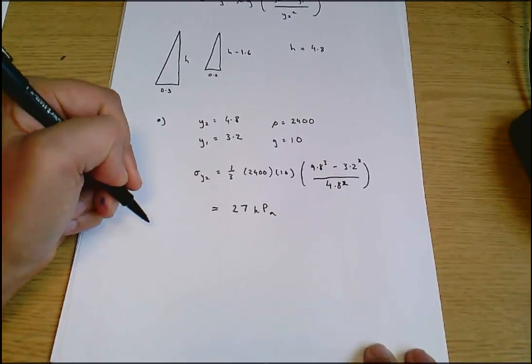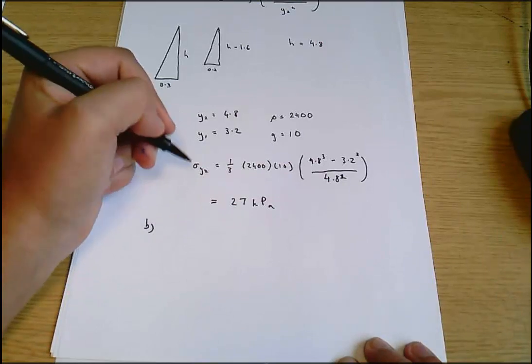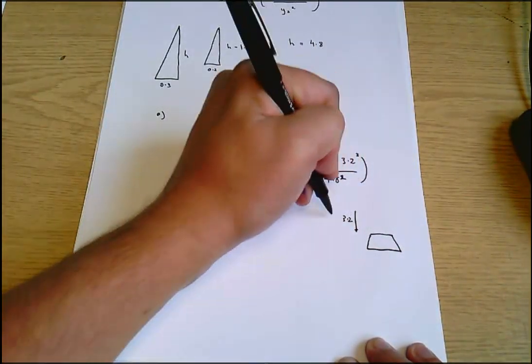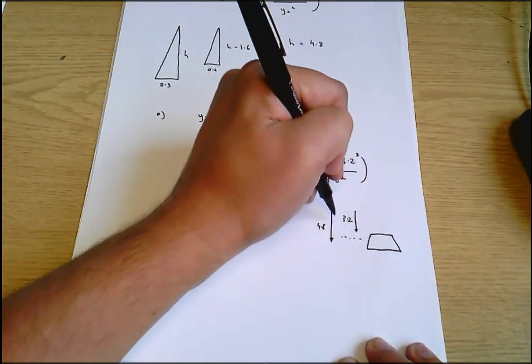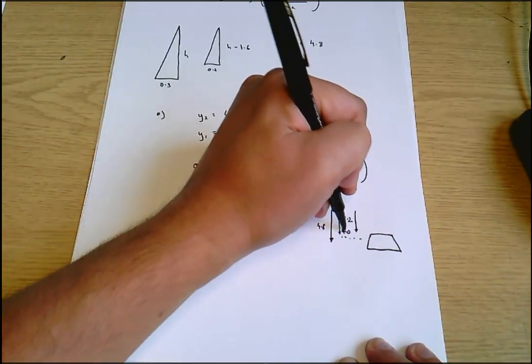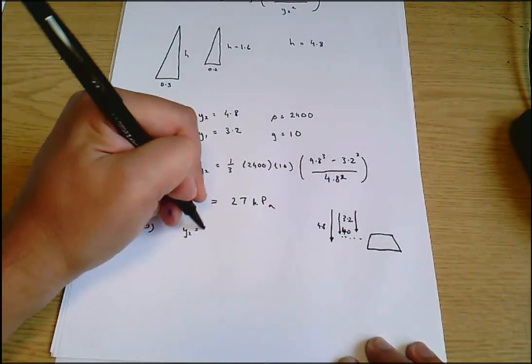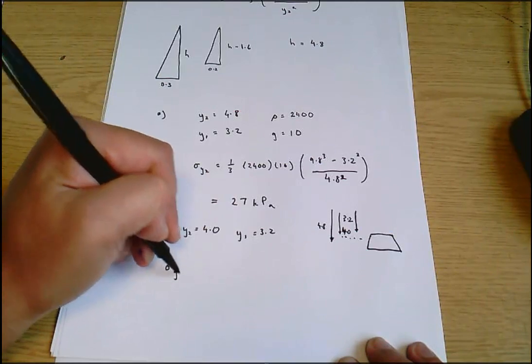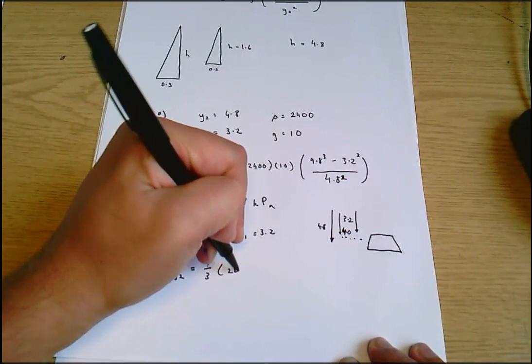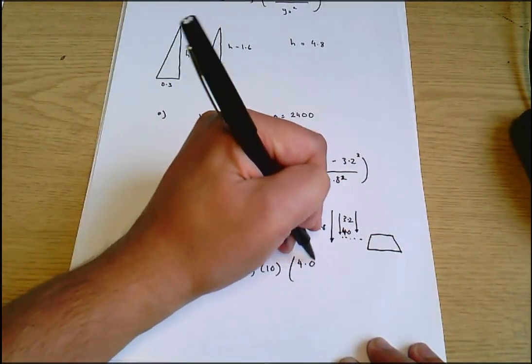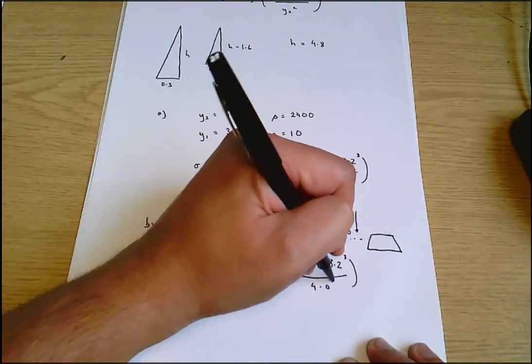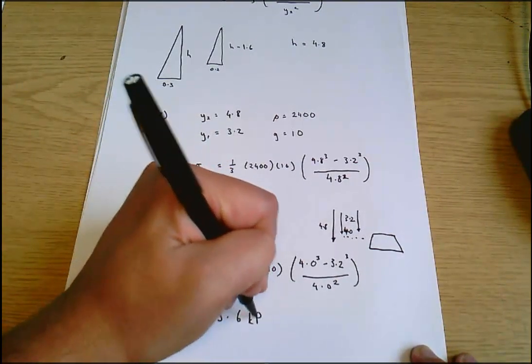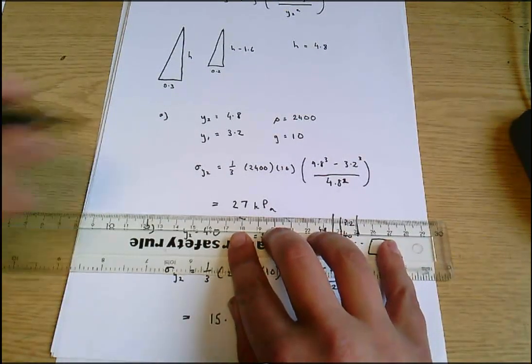And let's just do B where we're interested in the stress halfway up. So now if the pedestal looks like this, that height is 3.2. That height is 4.8. And so the height to the halfway point is going to be 4.0. It's the average of 3.2 and 4.8. So we get Y2 equals 4.0. Y1 still equals 3.2. Rho and G are as before. And the stress, stress at Y2 equals 1 3rd, 2400. And I won't put that all the way through my calculator. I've got an answer here. I know that's going to be 15.6 kilopascals.